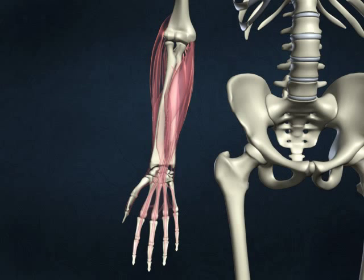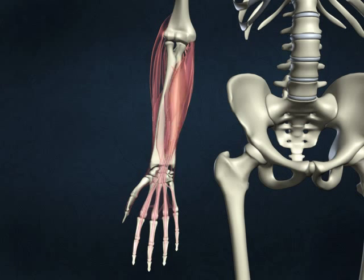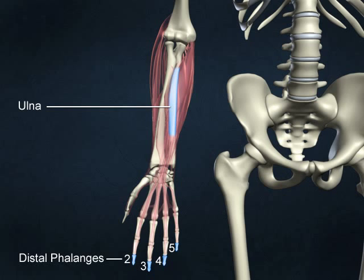The deep anterior flexor muscles of the wrist and hand are the flexor digitorum profundus and the flexor pollicis longus. The flexor digitorum profundus originates on the proximal three-quarters of the ulna, and its insertion is on the distal phalanges two through five.